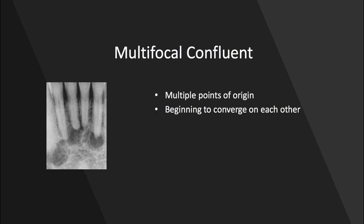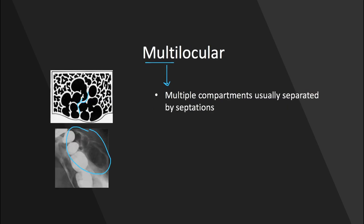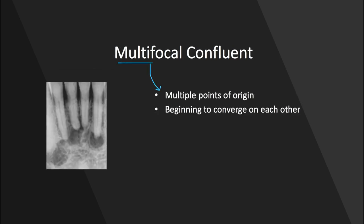Similar but a little bit different, we have the multifocal confluent radiolucency. Multifocal means that there are multiple points of origin. In the multi-locular radiolucency there is one central part — one point of origin. With multifocal, we have several points of origin, and all of these radiolucencies may be separate from each other but might be beginning to converge and merge with each other — that's where the confluent part comes in. Confluent means that they're beginning to converge on one another.